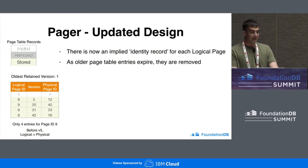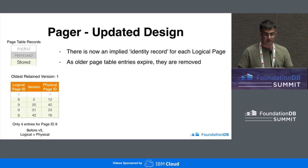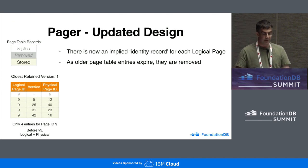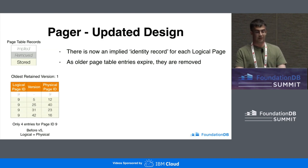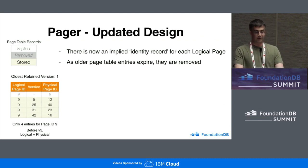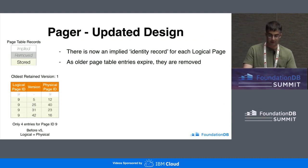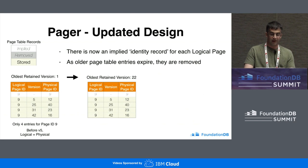In the updated design, the page table now has an implied identity record for each logical page, which basically says that if you look up a page at a version that is less than the oldest version in the table, the answer is the same page ID that went in — the physical page ID is the same as the logical page ID. So as older page table entries expire, they are removed.